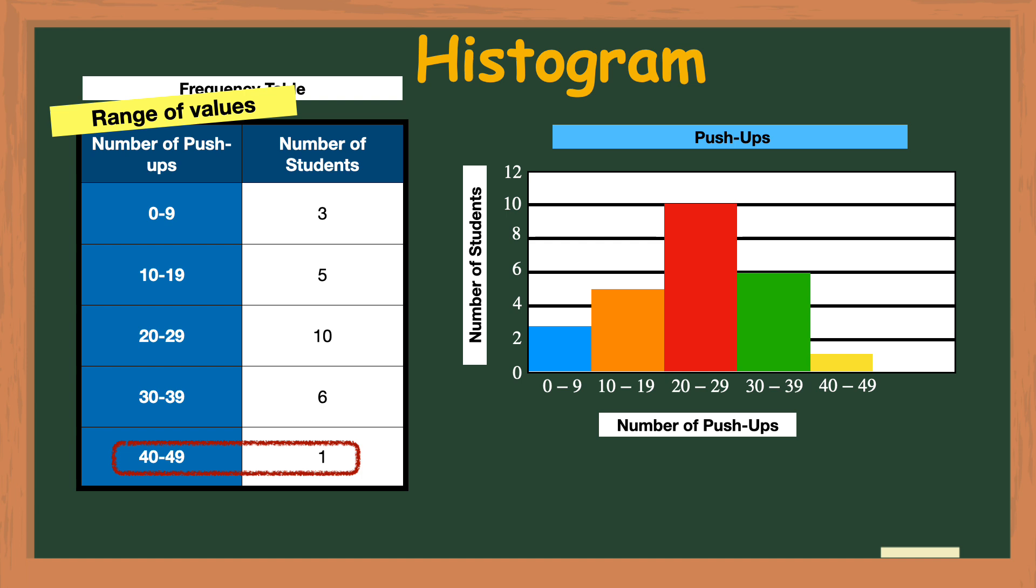Once you have drawn all of your bars you have created a histogram. As you can see histograms are a great way to visualize data and see patterns. For example it is plain to see that most students were able to complete between 20 and 29 push-ups. And it was probably super hard to complete between 40 and 49 push-ups because just one student was able to do it. You can also see that most students were able to complete between 10 and 39 push-ups.